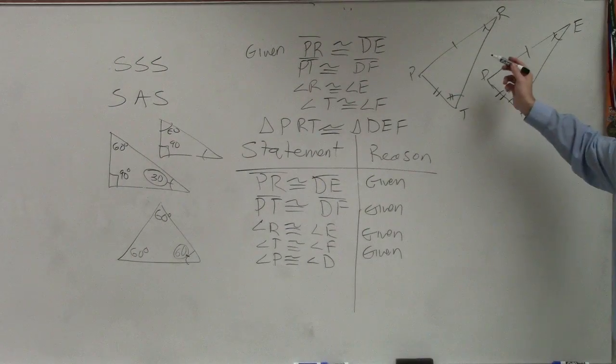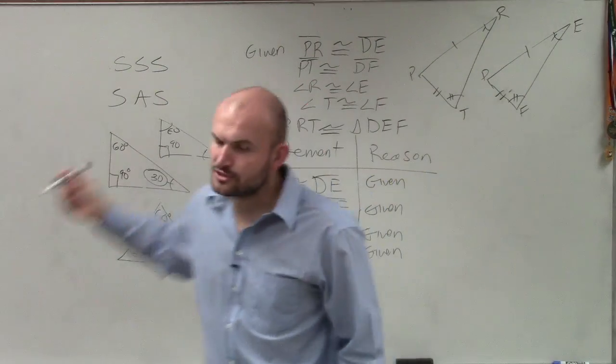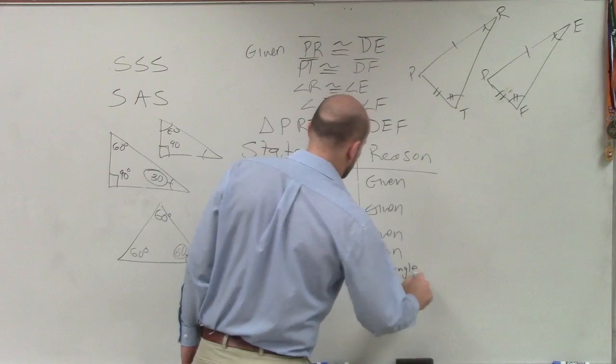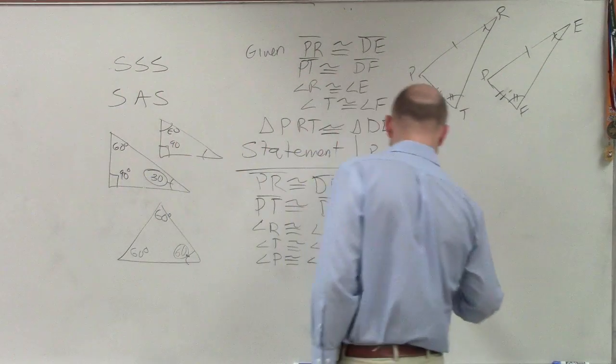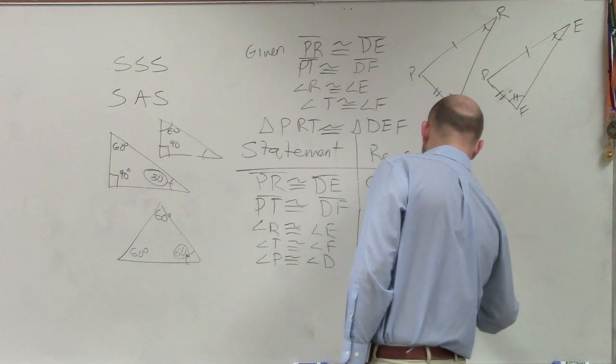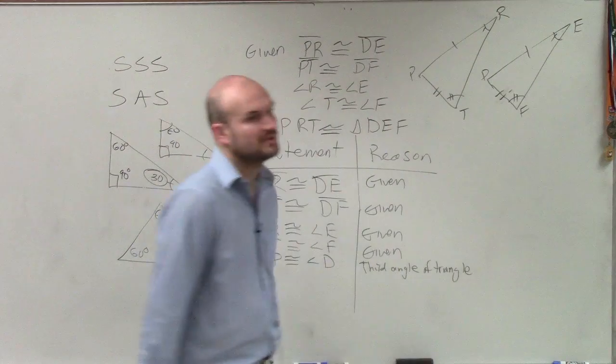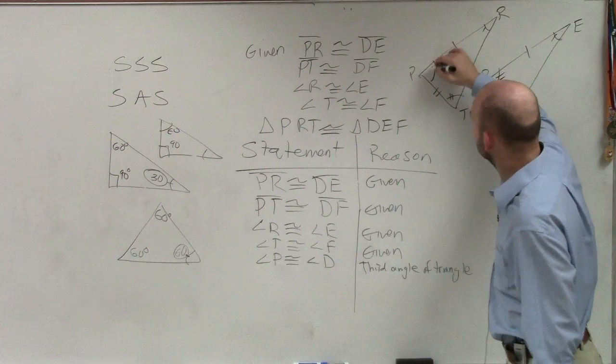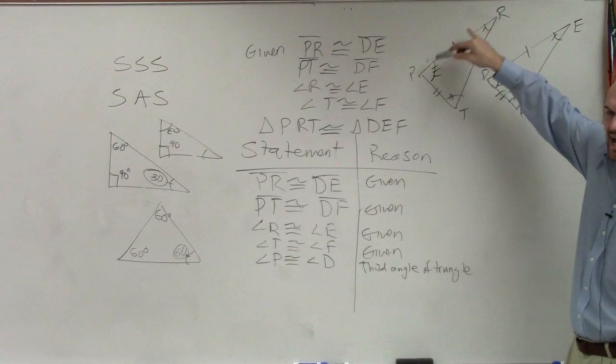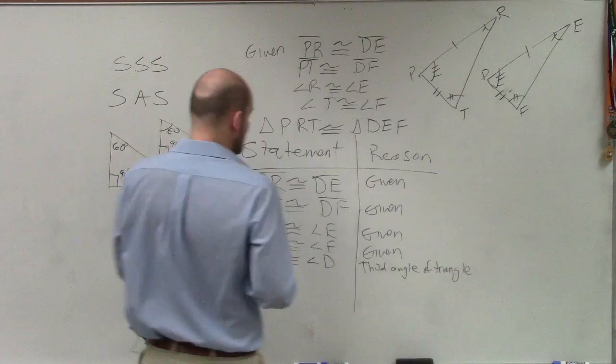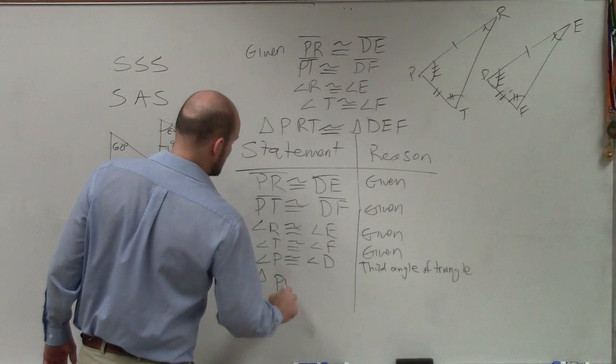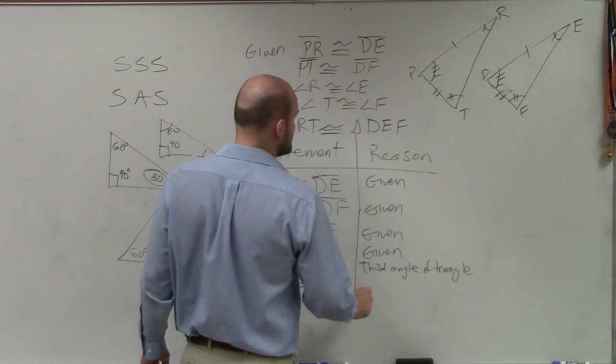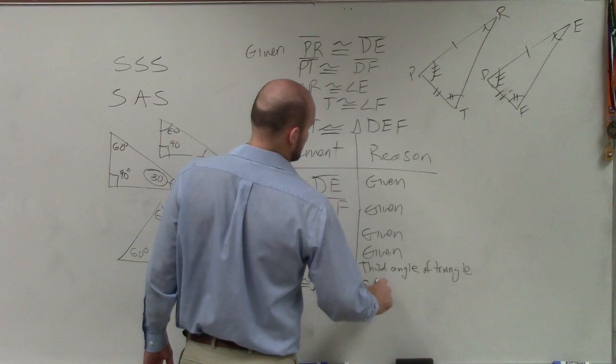And then this is what we call the missing, or the third, the third side angle theorem, or the third angle. Because if you know two angles are equal, then you know the third angle has to be equal. So now I have these are equal to each other. Well, guess what? Now I have side, angle, side. So therefore, ladies and gentlemen, now you can say that triangle PRT is congruent to triangle DEF, and the reason being is because you have side, angle, side.